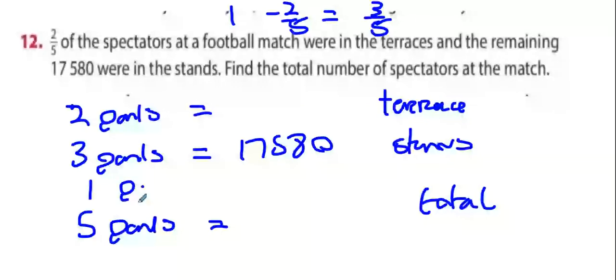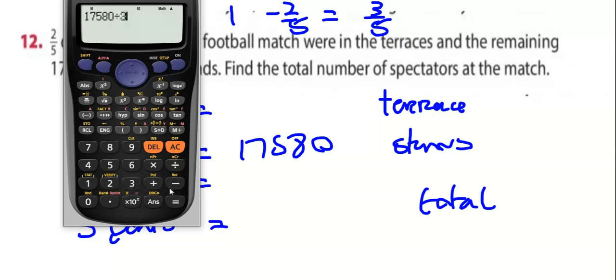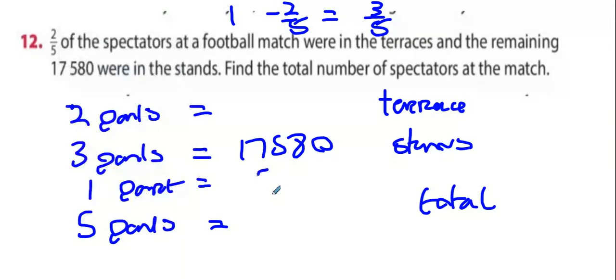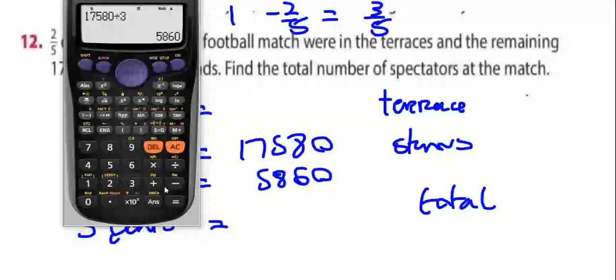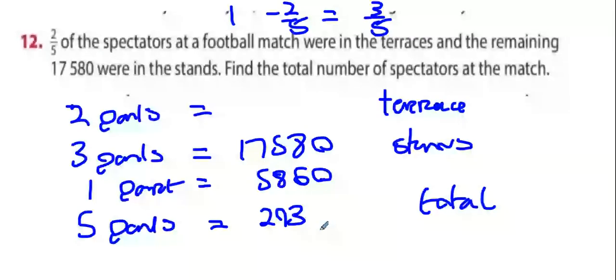How do you figure out what one part is? Divide by three. So 17,580 divided by three, you get 5,860. Then multiply that by five. So we've got 29,300. And that is the last fraction question we're doing.